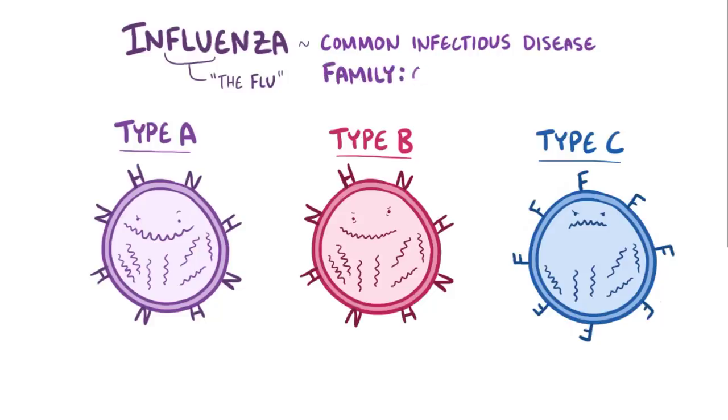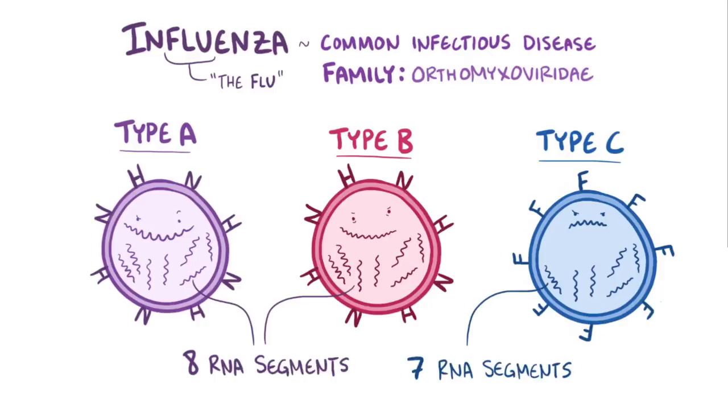Influenza belongs to the virus family orthomyxoviridii, and type A and B have genomes that are made up of 8 RNA segments, whereas type C has a 7-segment RNA genome, with each segment containing a few genes.